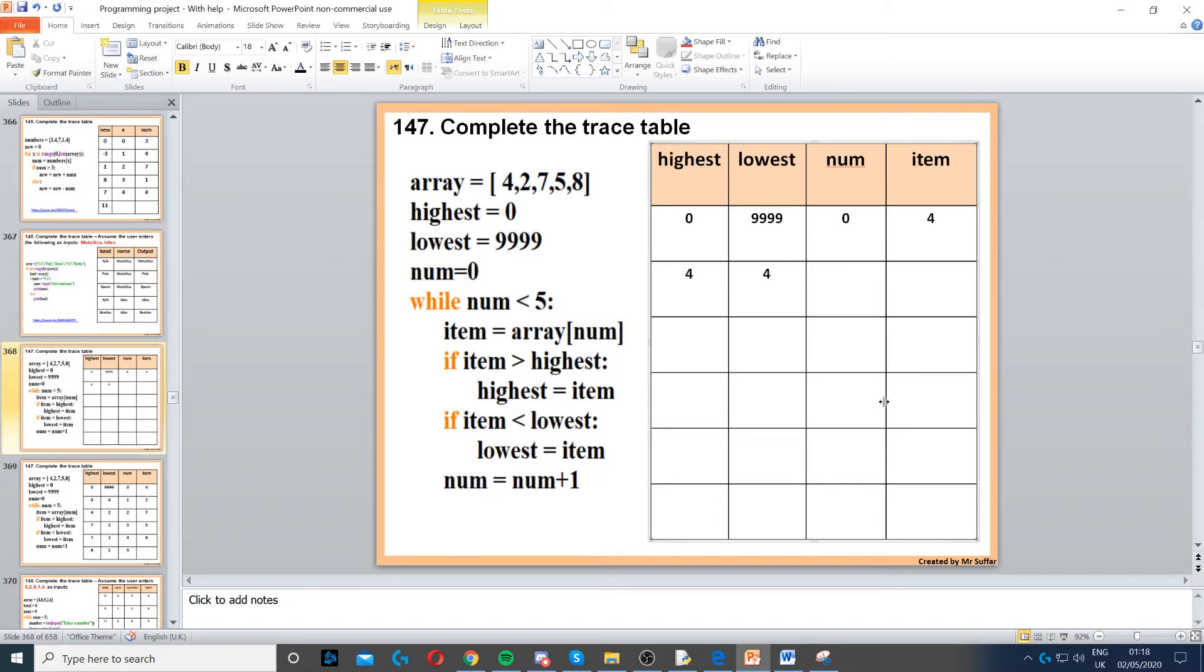Num equals num plus 1, num increments by 1. Then we go to the start of the while loop. While num is less than 5, that's true, so we do the loop again. Item is equal to array num. Next index is 2, so 2 is not greater than highest, so we keep highest as 4. 2 is less than 4, so now we set lowest to 2.